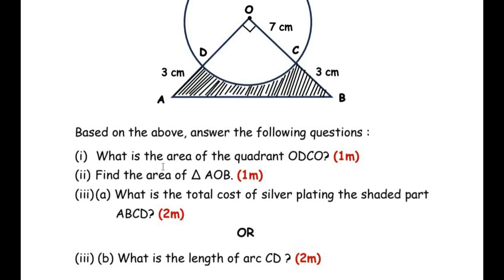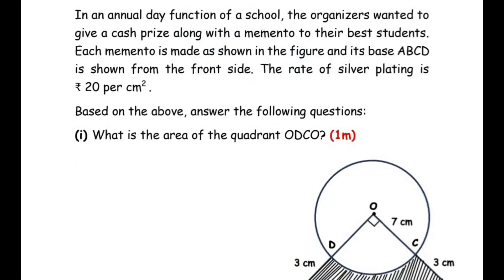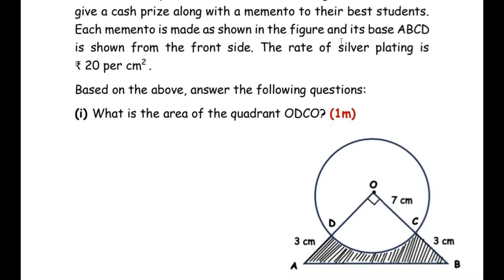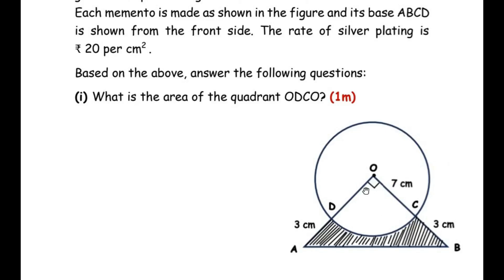In an annual day function of a school, the organizers wanted to give a cash prize along with a memento to their best students. Each memento is made as shown in the figure, and its base ABCD is shown from the front side. The rate of silver plating is rupees 20 per centimeter square. The shaded region ABCD is the base — the standing point of this entire memento — and it is silver plated at rupees 20 per centimeter square.